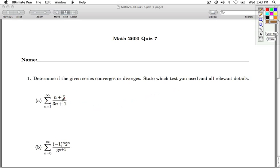Remember, the first test we always use is the nth term test. So if I look at the nth term here and look at the limit as n goes to infinity of n plus 5 over 3n plus 1, I'm going to get 1 third.